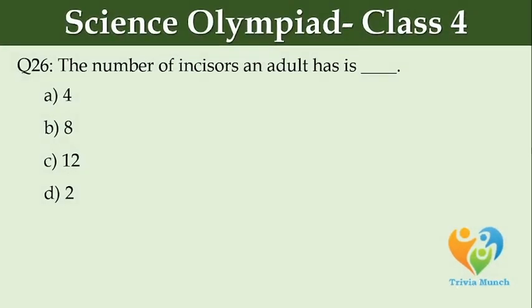The number of incisors an adult has is dash. Option A: 4. Option B: 8. Option C: 12.